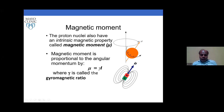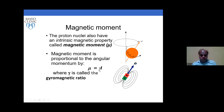Regarding magnetic moment: all materials in the world have magnetic properties. The hydrogen proton nuclei also have an intrinsic magnetic property called magnetic moment. The magnetic moment is proportional to angular momentum: μ = γI, where γ is the gyromagnetic ratio.